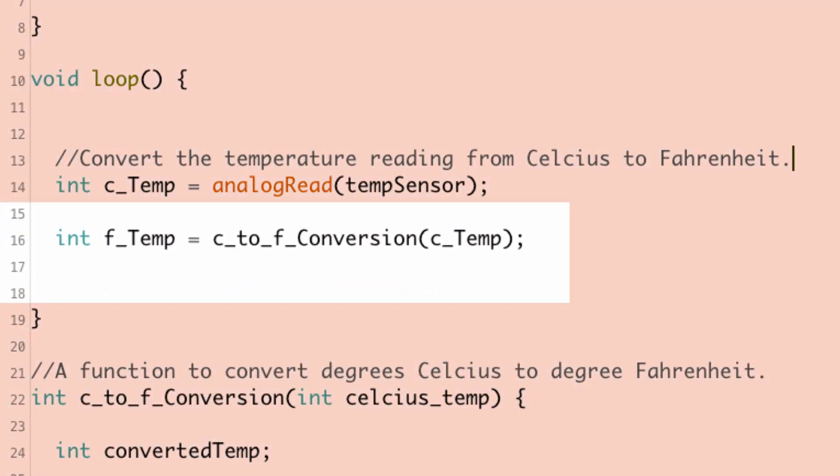Another example would be a Celsius to Fahrenheit converter function. It might take a number in Celsius and then return a converted value in Fahrenheit. So it returns the Fahrenheit value, and if you want that value, you need to assign it to a variable.